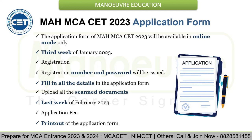Let us discuss the MCA CET 2023 application form. The application form for MAH MCA CET 2023 will be available in online mode only — forms will not be available offline, you will have to fill them online only. Candidates can fill their application form from the third week of January 2023. Candidates will have to first register themselves by entering the required details, after which a registration number and password will be issued.